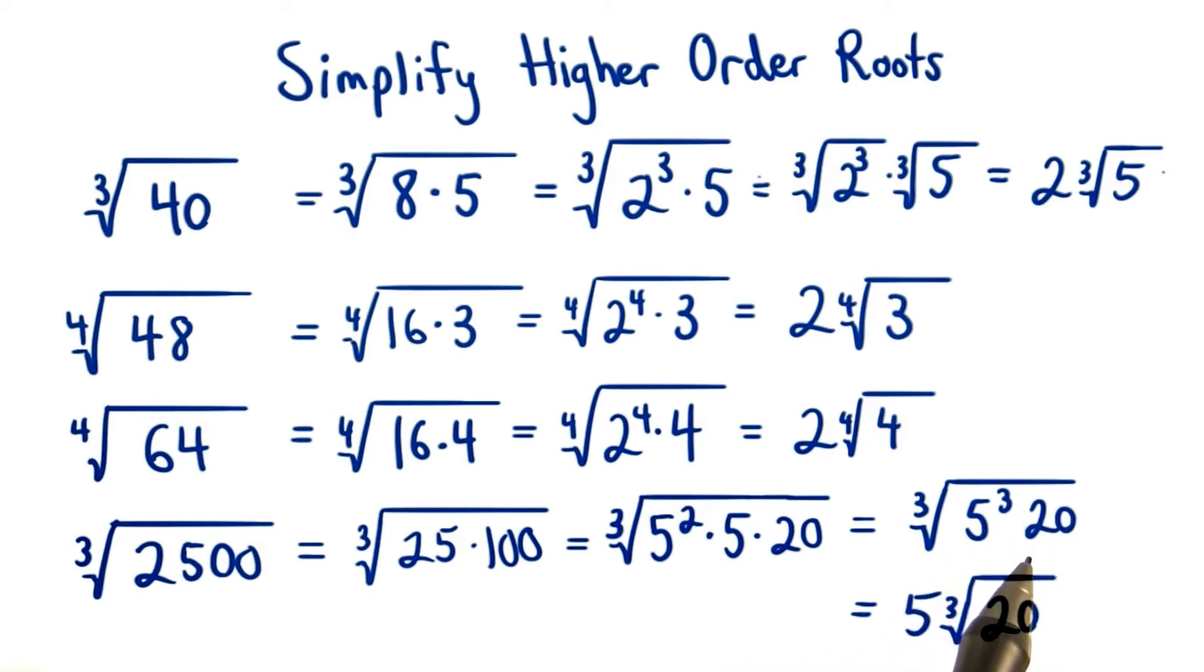20 is not a perfect cube, since the factors of 20 are 2, 2, and 5. There's not three factors that repeat. This means 20 stays inside of our cube root, and we're left with our final answer: 5 times the cube root of 20.